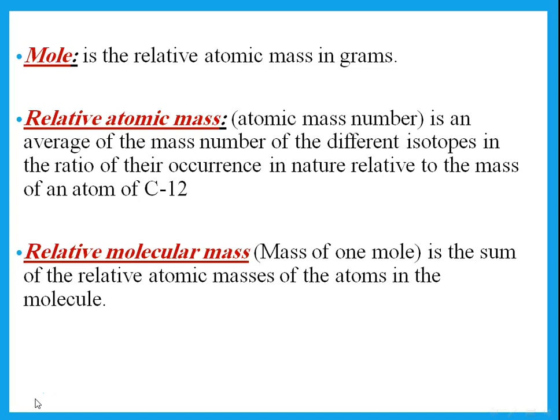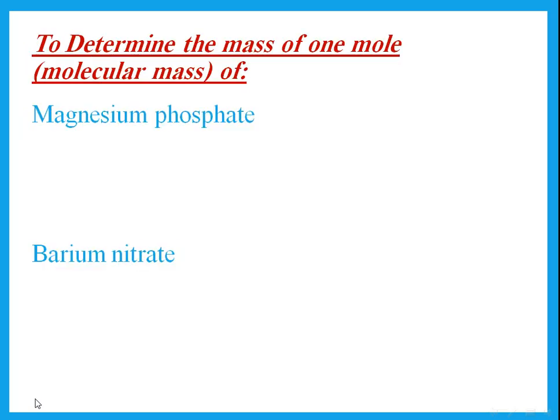Relative atomic mass is the average of the mass numbers of the isotopes in the ratio of their occurrence in nature, relative to the mass of an atom of carbon-12. Relative molecular mass is the mass of one mole, which is the sum of all the atomic masses of the atoms in the molecule.